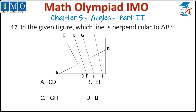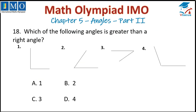Question number 17: In the given figure, which line is perpendicular to AB? Line IJ is not perpendicular — it's less than 90 degrees. GH is also not a right angle — it's less than 90 degrees. EF is also less than 90 degrees. CD is 90 degrees, so CD is perpendicular to AB. That is option A, so option A is correct.